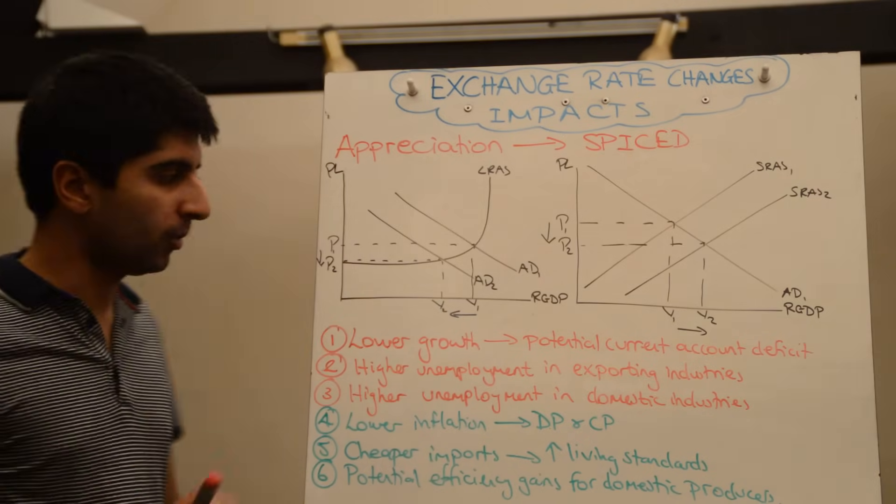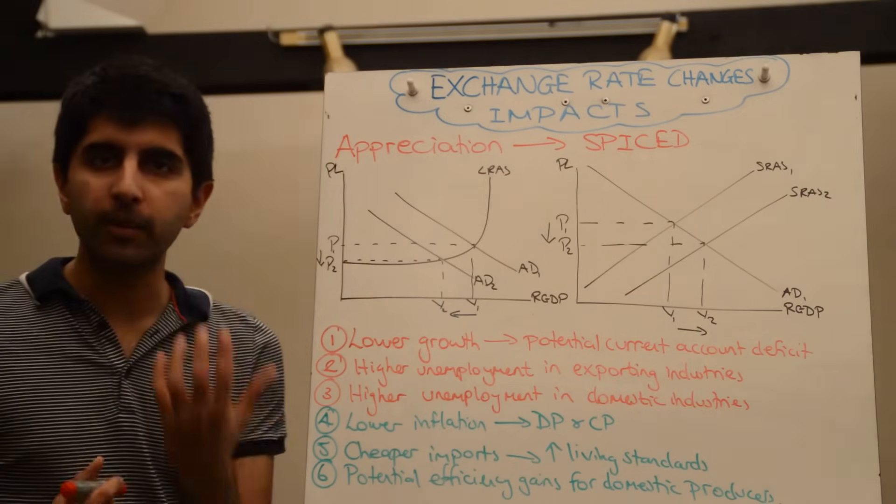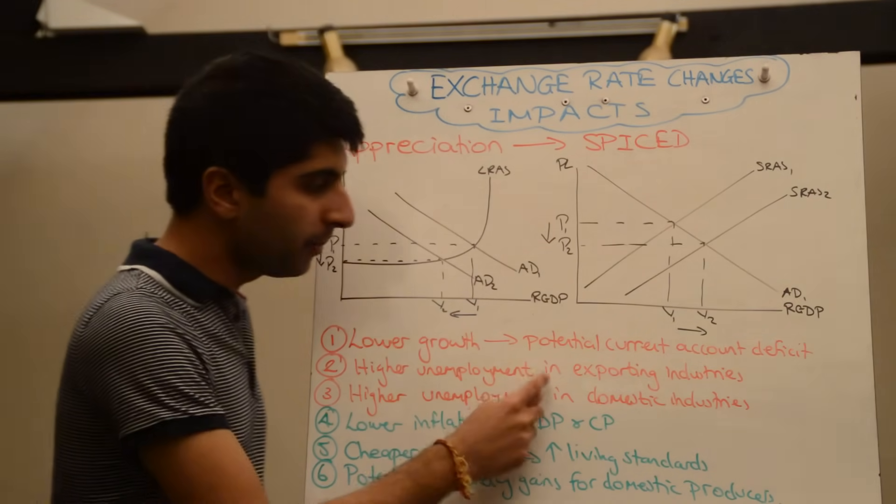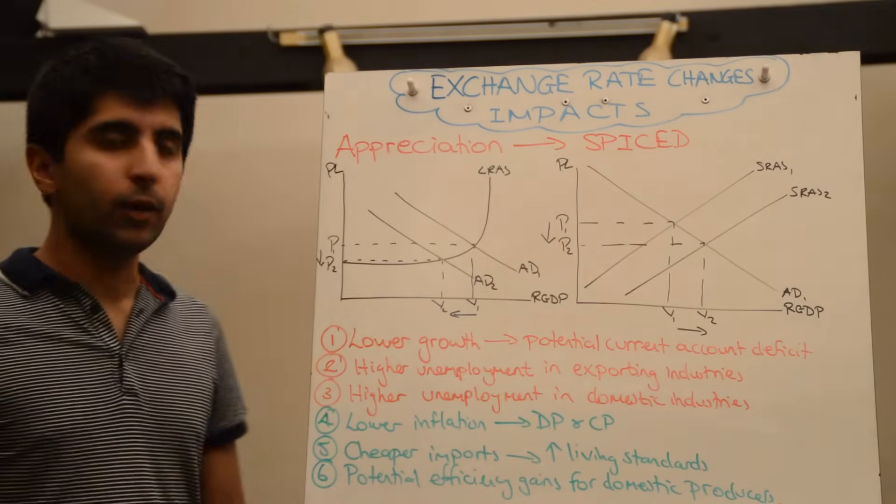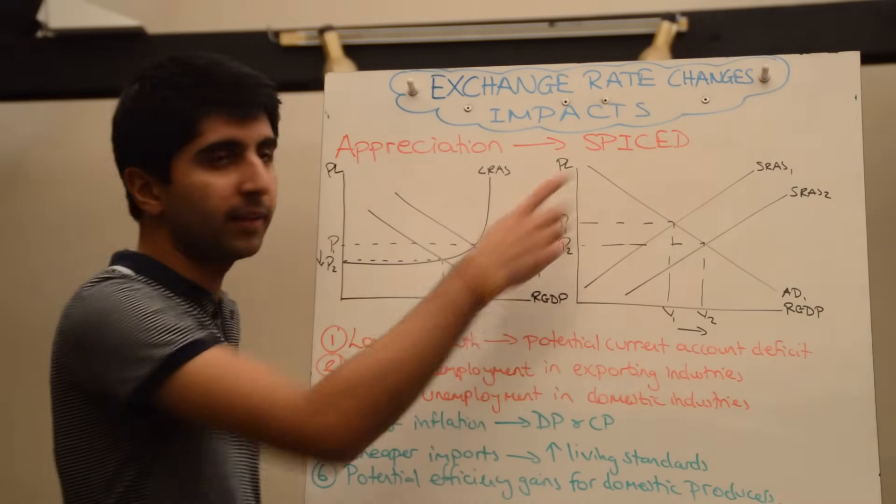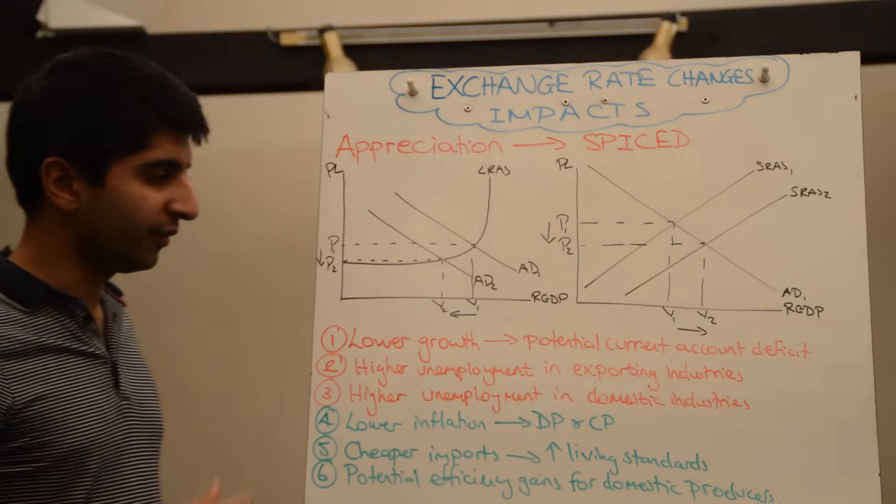So lower growth, higher unemployment. And when it comes to higher unemployment, we can be more specific: higher unemployment in exporting industries, of course, who are going to suffer now because exports are more expensive. Demand for exports likely to fall away.